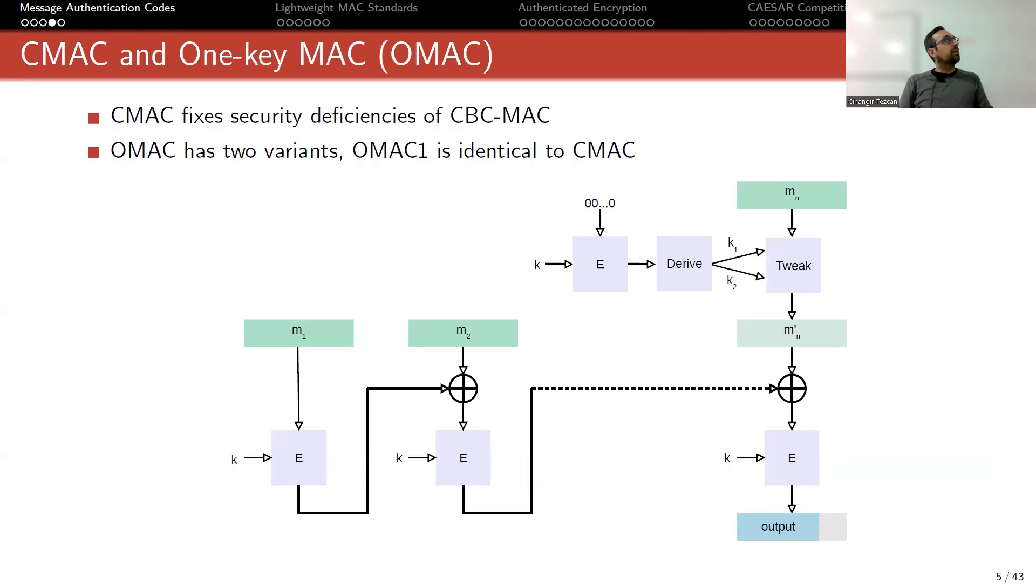CMAC or OMAC is preferred instead of CBC-MAC. CMAC fixes security deficiencies of CBC-MAC. OMAC has two variants, OMAC1 and OMAC2, and OMAC1 is identical to CMAC. These topics are not that popular, so it is hard to find documentation for this. It is similar to CBC-MAC, but here you also use the secret key and you derive some further keys and use it to tweak the message last block. This way, some of the security problems in CBC-MAC are resolved.